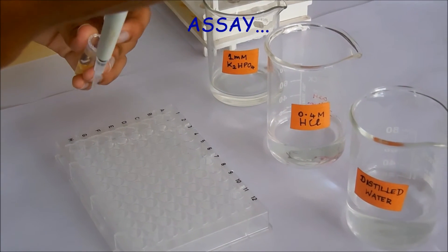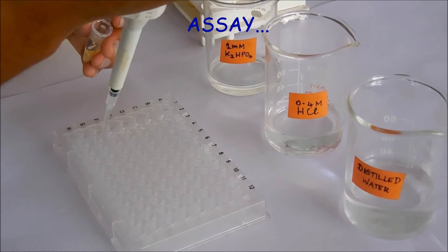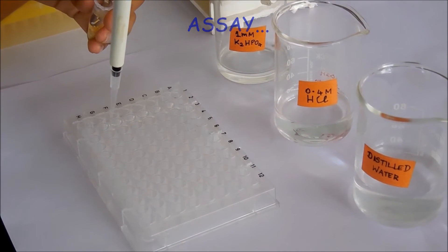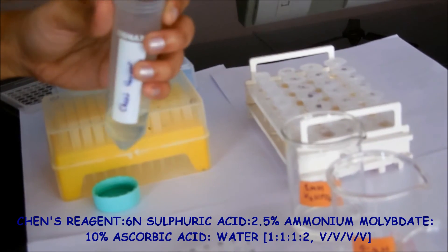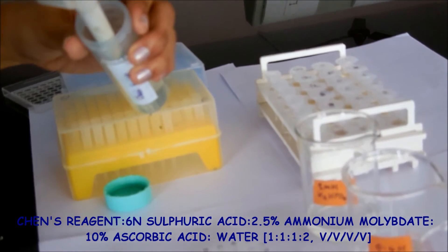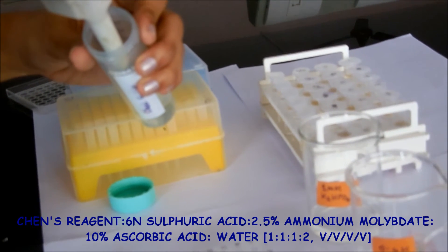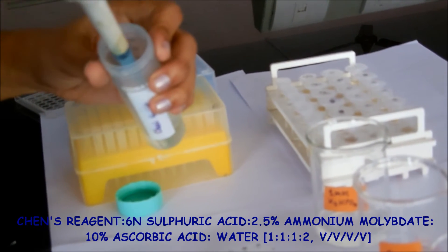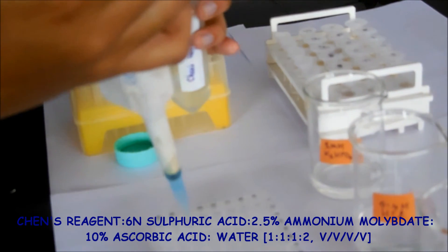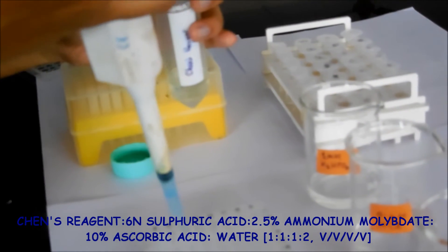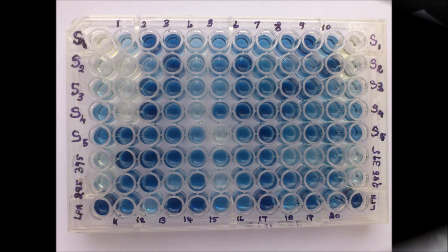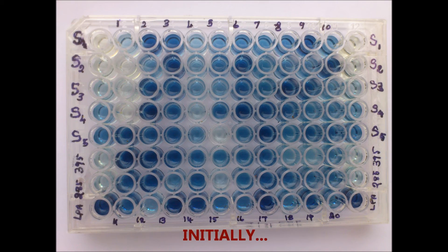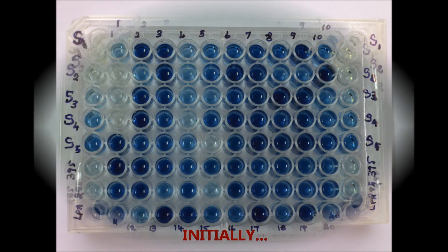For the assay, samples were briefly mixed and 10 microliters were removed and supplemented with 90 microliters of Chen's reagent in a microtiter plate. Chen's reagent comprises 6 normal sulfuric acid, 2.5% ammonium molybdate, 10% ascorbic acid, and water in the ratio 1:1:1:2. In these conditions, if phosphate is present,